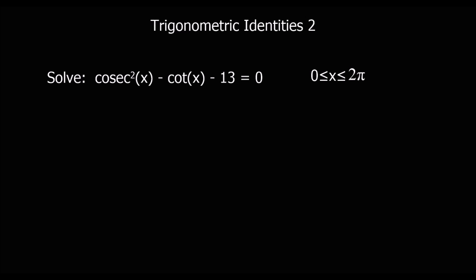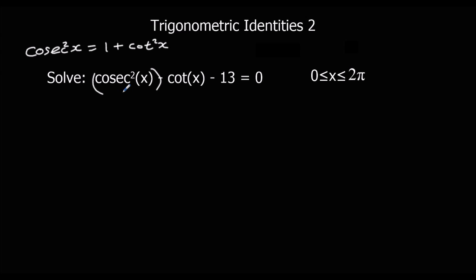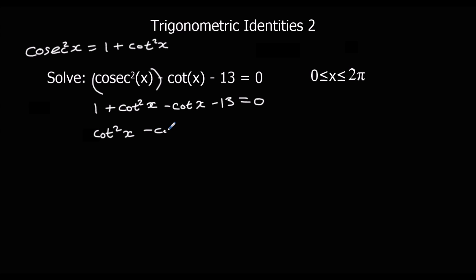Here we've got another similar question: cosec²x − cot x − 13 = 0. This time we're going to get rid of cosec²x using the identity cosec²x = 1 + cot²x. So we replace cosec²x with 1 + cot²x: 1 + cot²x − cot x − 13 = 0. Collecting like terms: cot²x − cot x − 12 = 0.